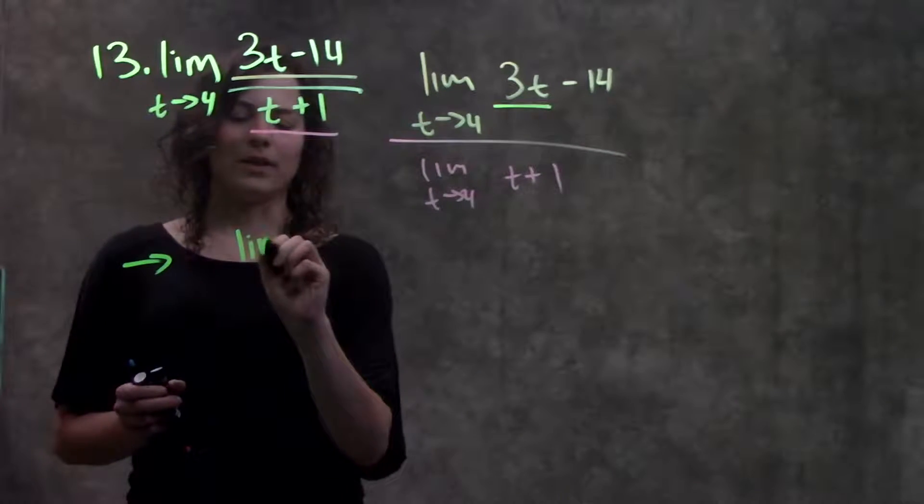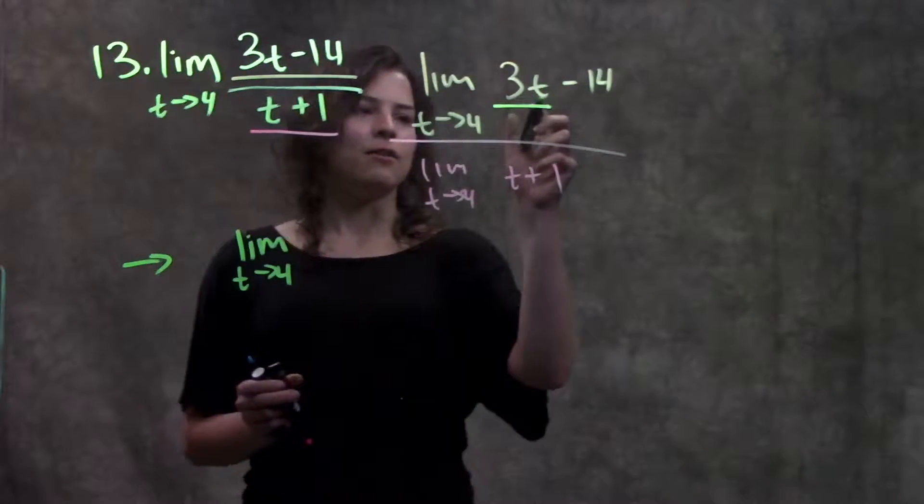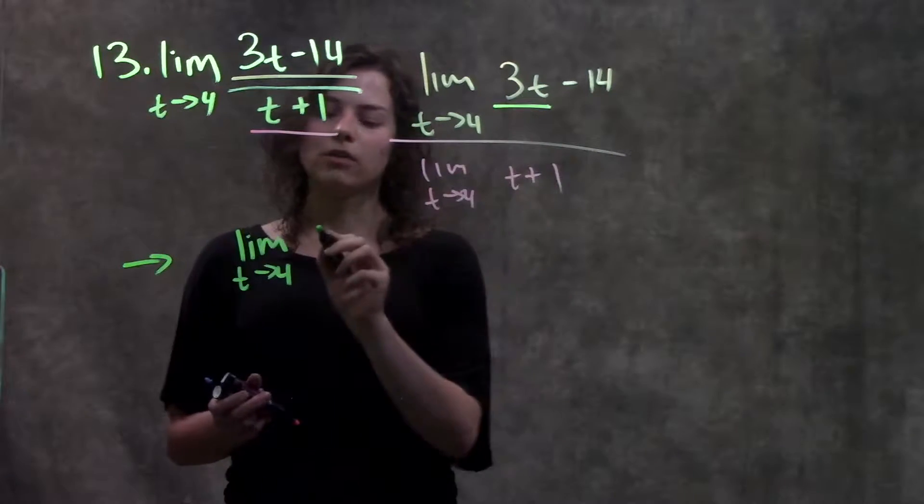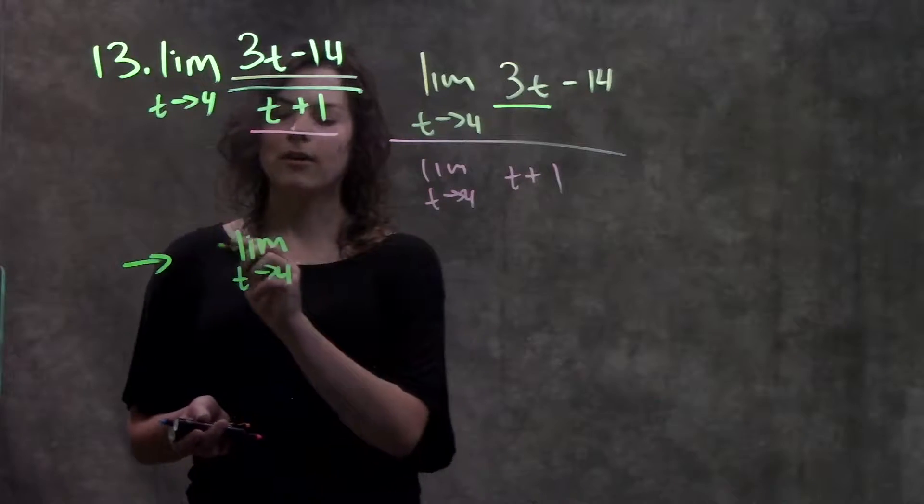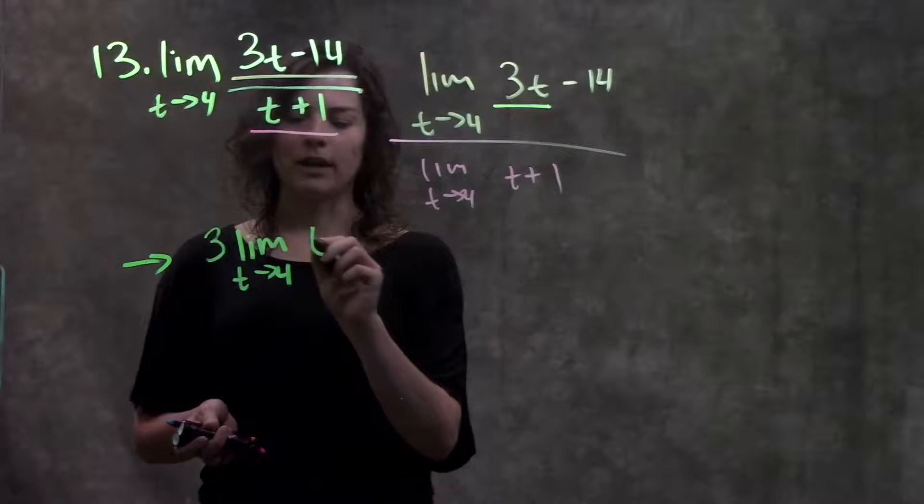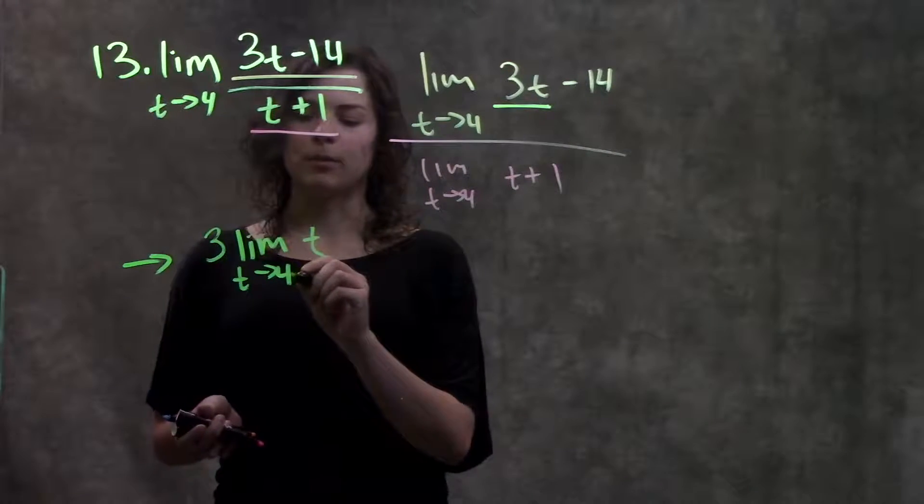So on the numerator, I have the limit as t approaches 4 of, I'm going to skip a step here. I could write a 3t here. I'm going to go ahead, move the constant out to the front, and just write the limit as t approaches 4 of t.